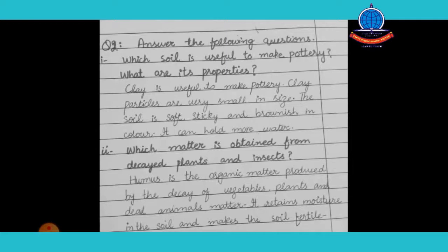Question 1: Which soil is useful to make pottery and what are its properties? The answer is clay. Clay particles are very small in size, the soil is soft, sticky and brownish in colour, and it can hold more water. Question 2: Which matter is obtained from decayed plants and animals? Humus is the organic matter produced by the decay of vegetables, plants and dead animals. It retains moisture in the soil and makes it fertile.